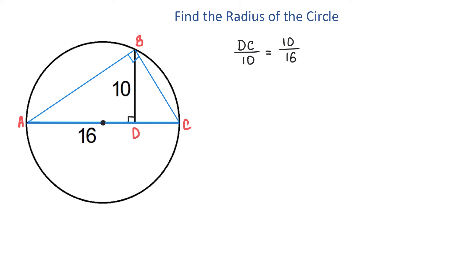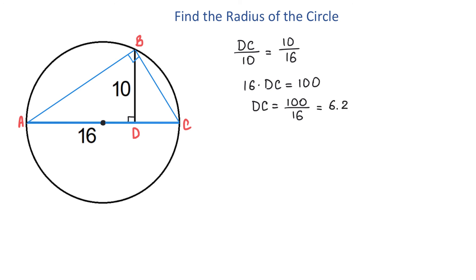To solve this proportion, we will use cross-multiplying. We have 16 multiplied by DC equals 10 times 10, which makes 100. If we divide both sides by 16, we get DC equals 100 over 16, which as a decimal is 6.25.